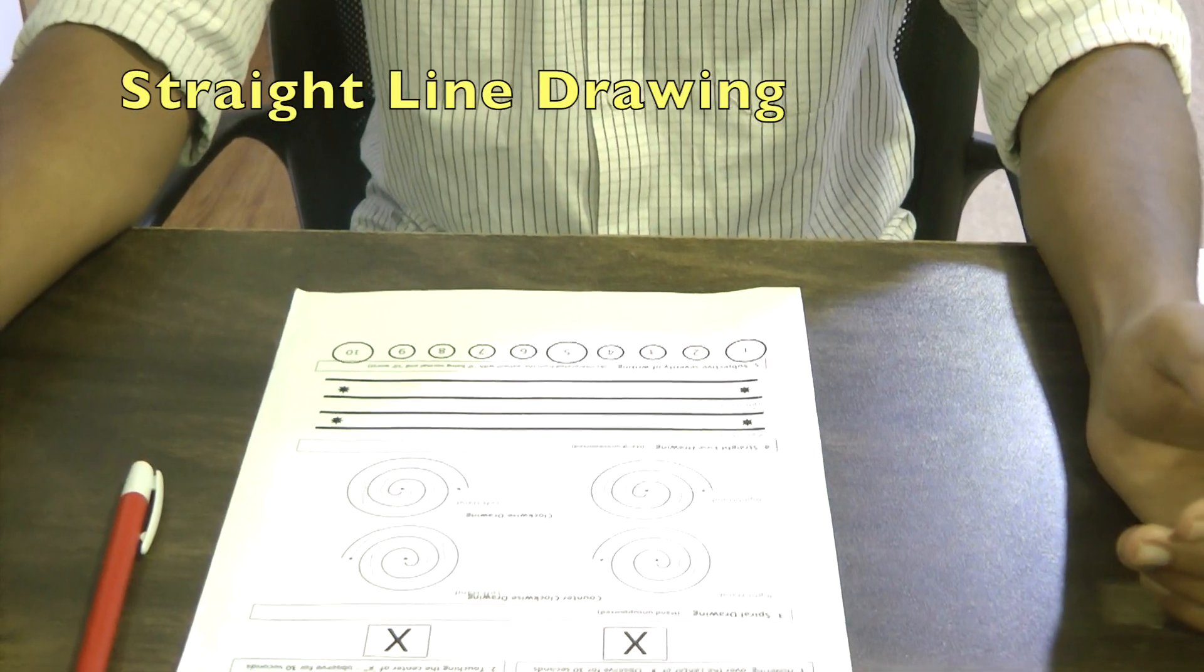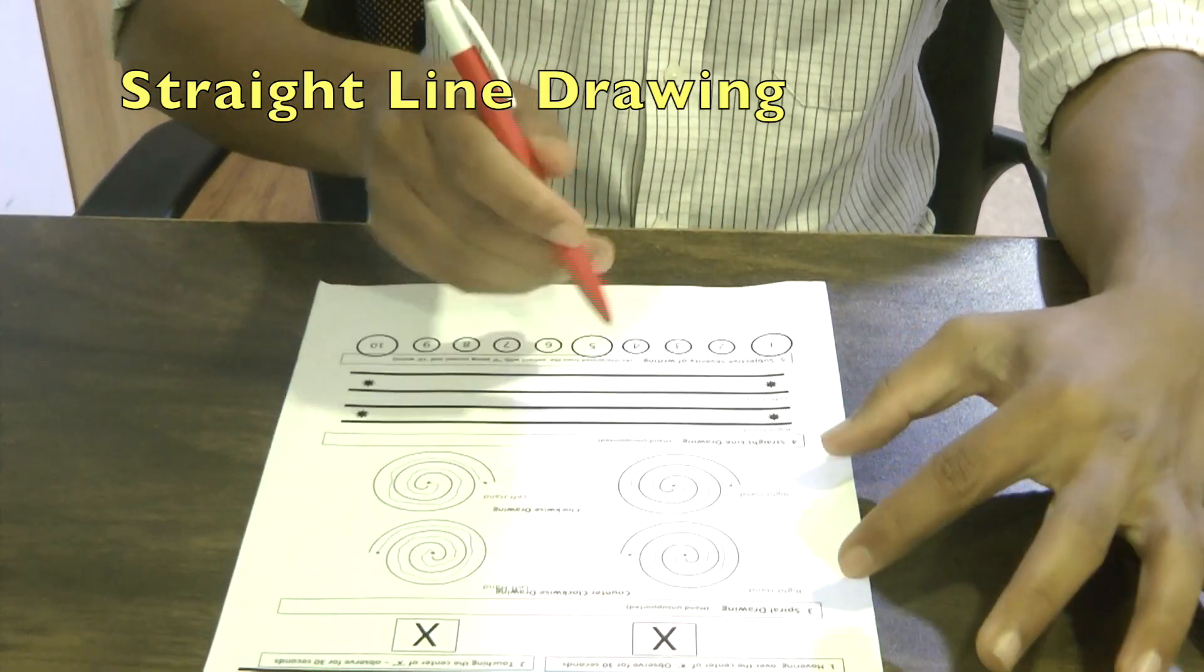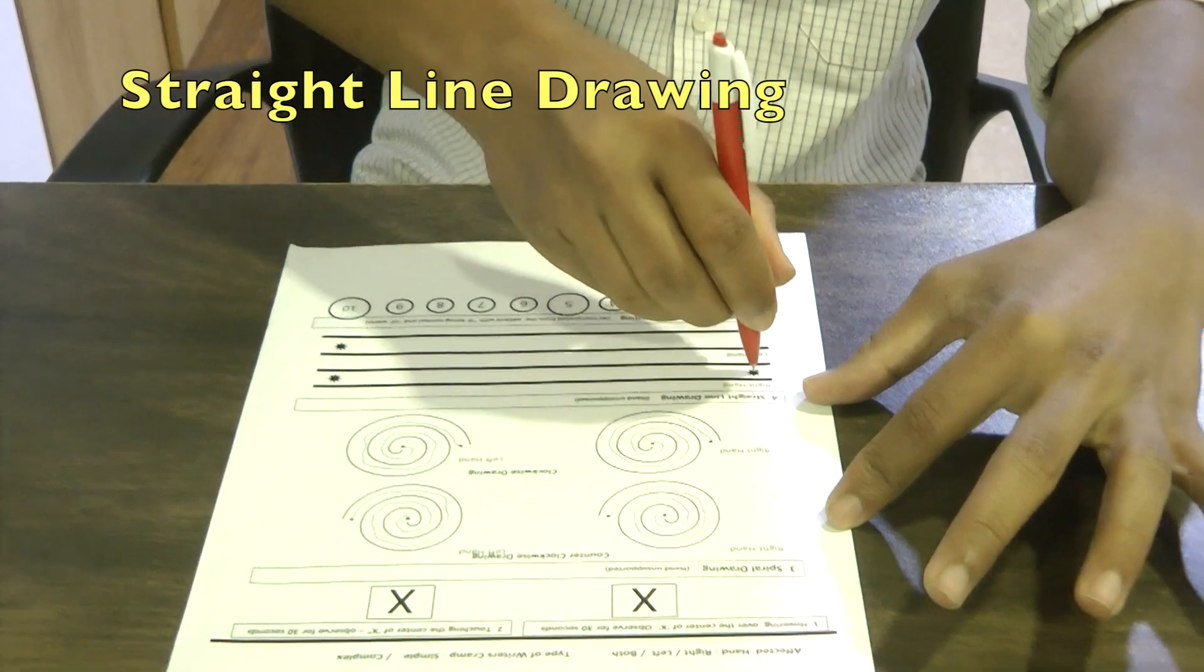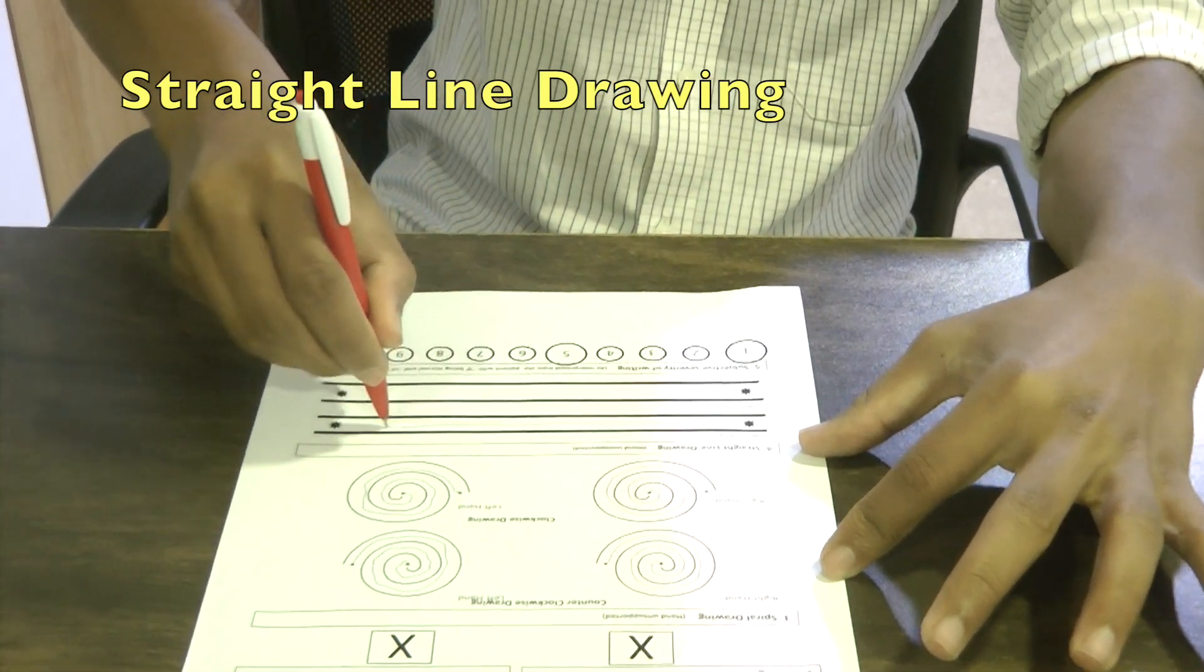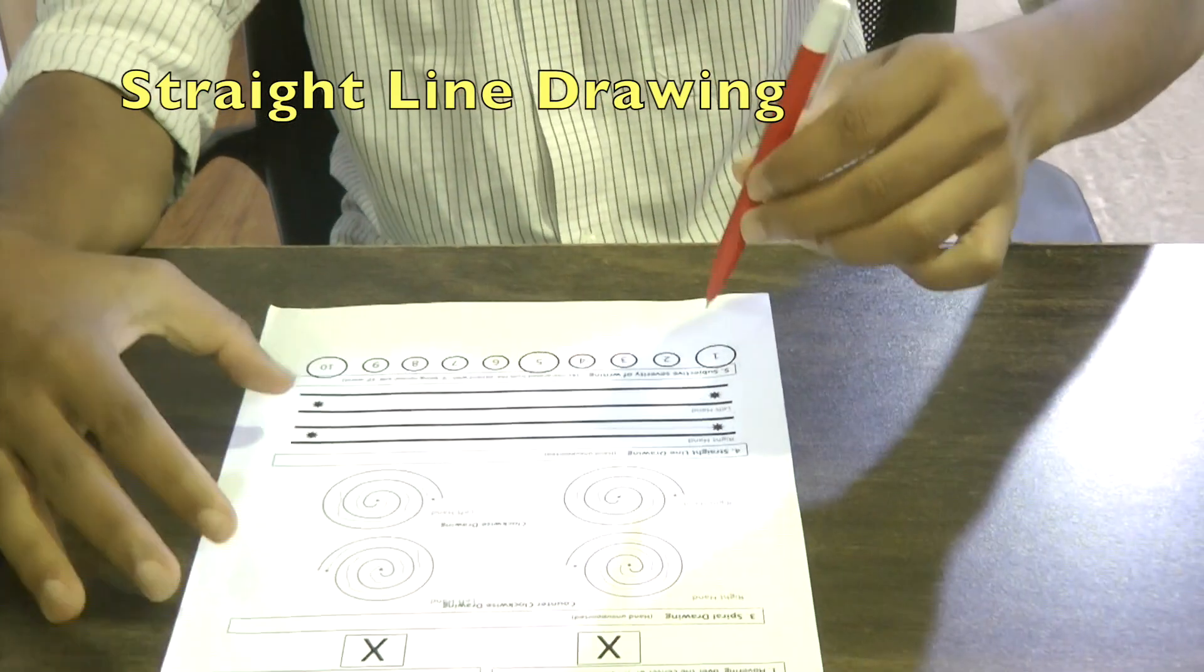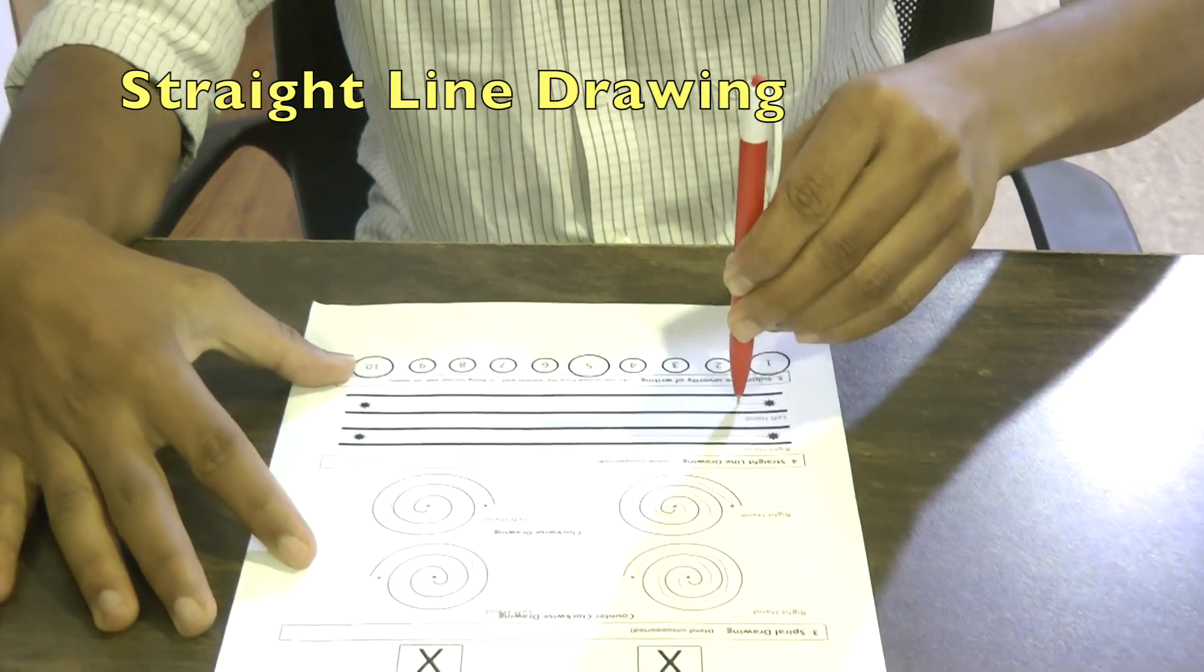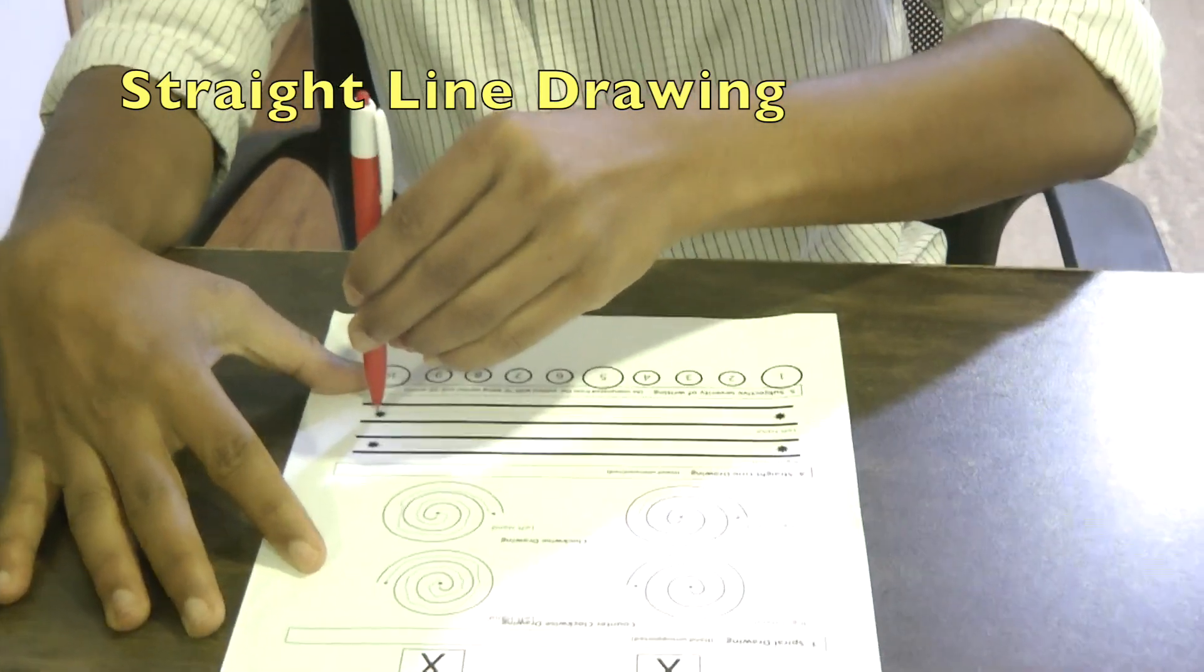The spiral movements would be followed by having the straight line drawing with the unsupported hands. The unsupported hand straight line drawing, which is done once again with the right hand separately and the left hand separately, will help us to look for any abnormal dystonic movements in proximal muscles, such as involving the elbow or possibly the shoulder also.